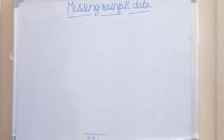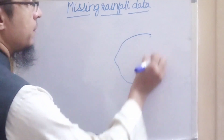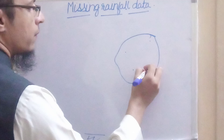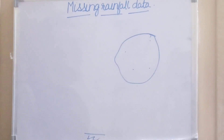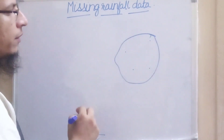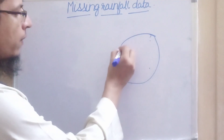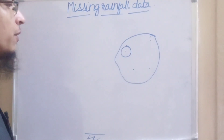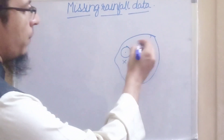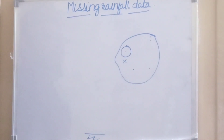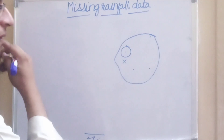Hello and welcome to my YouTube channel. In this video we will be discussing about missing rainfall data. Suppose we have a catchment area and we have four rainfall gauging stations in this catchment area. If we collect the rainfall data we need to ensure consistency and continuity of the data. If for one particular year the data was not recorded or data was missing, how can we estimate the data at this gauging station using the data of neighboring gauging stations?